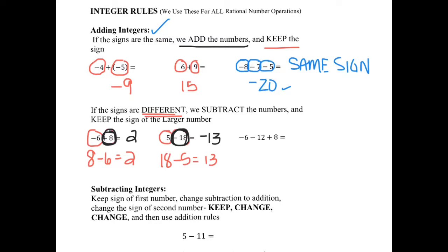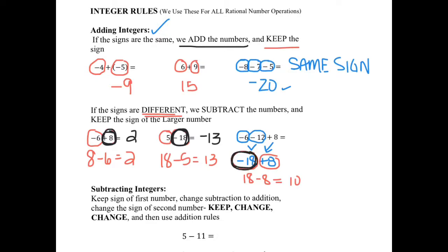This last example requires two different rules. I'm going to circle all of the numbers. Signs are the same — negative 6 and negative 12. Same signs: add and keep. 6 plus 12 is 18, keep the sign, giving negative 18. Then I bring down positive 8. I now have negative 18 and positive 8. Signs are different, so I subtract: 18 minus 8 is 10. Keep the sign of the bigger number — negative 18 is larger, so my final answer is negative 10.